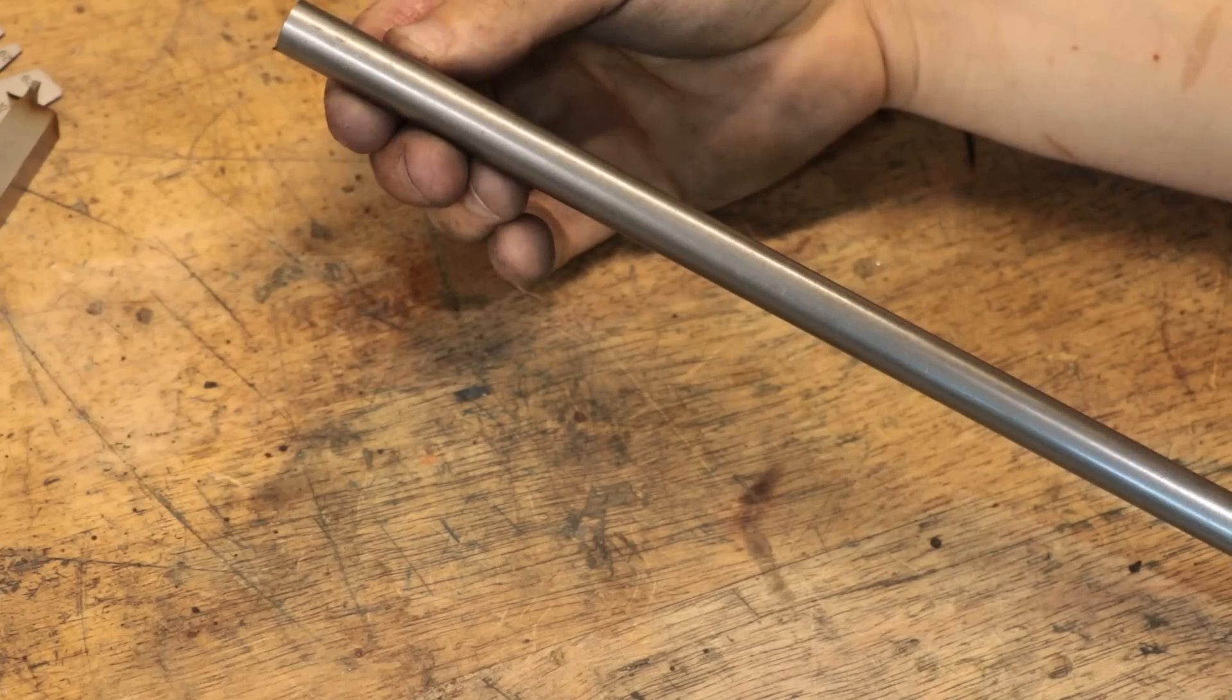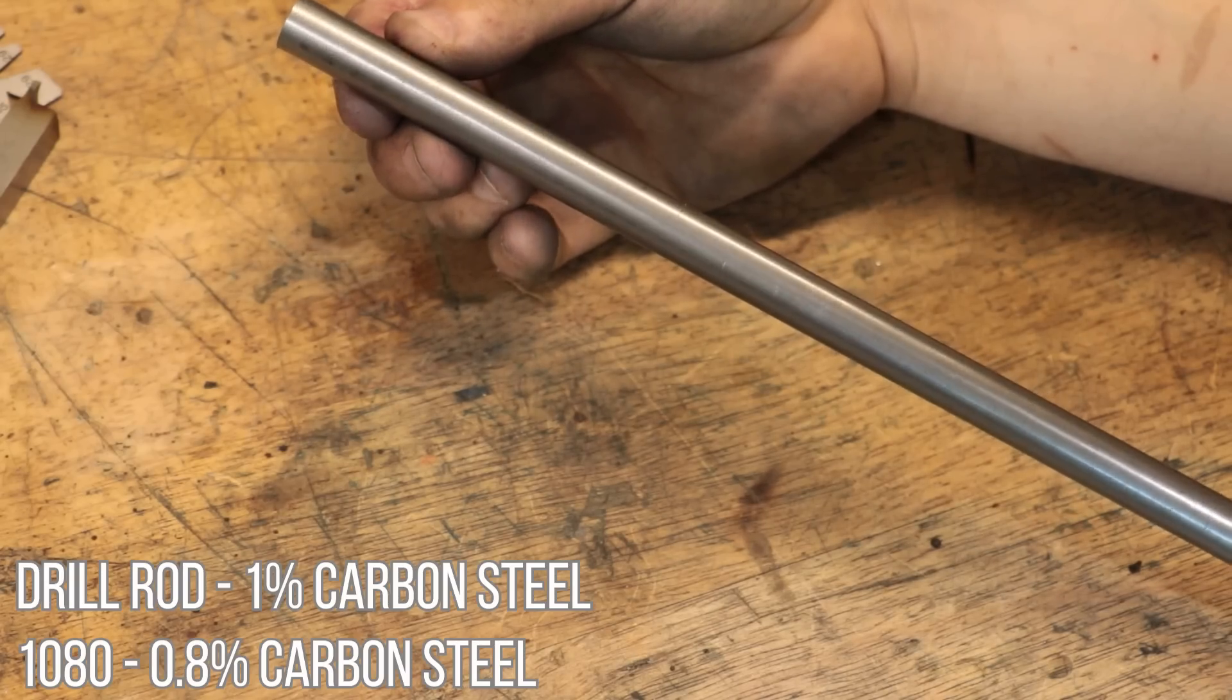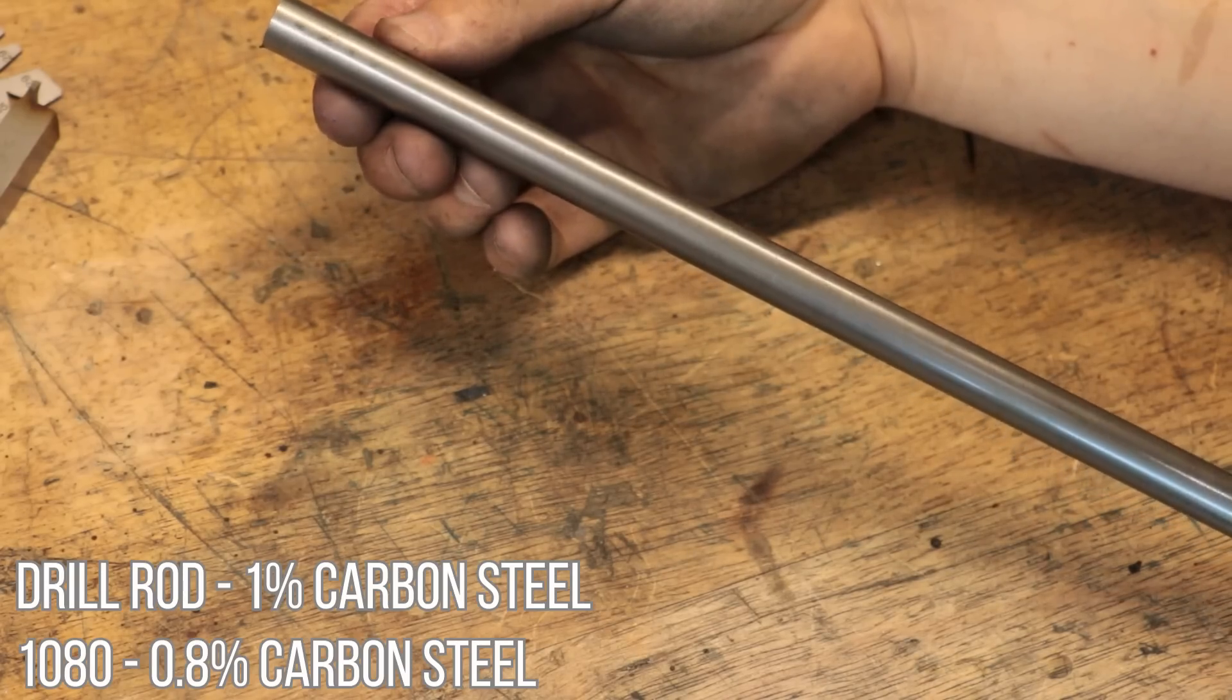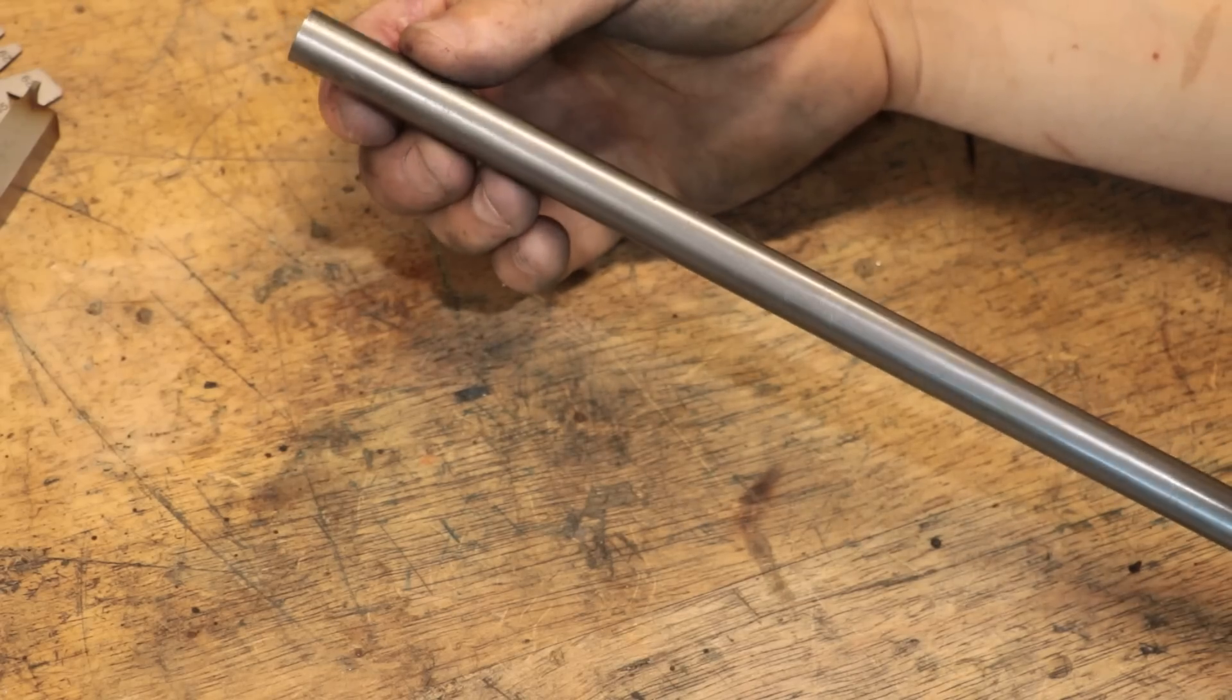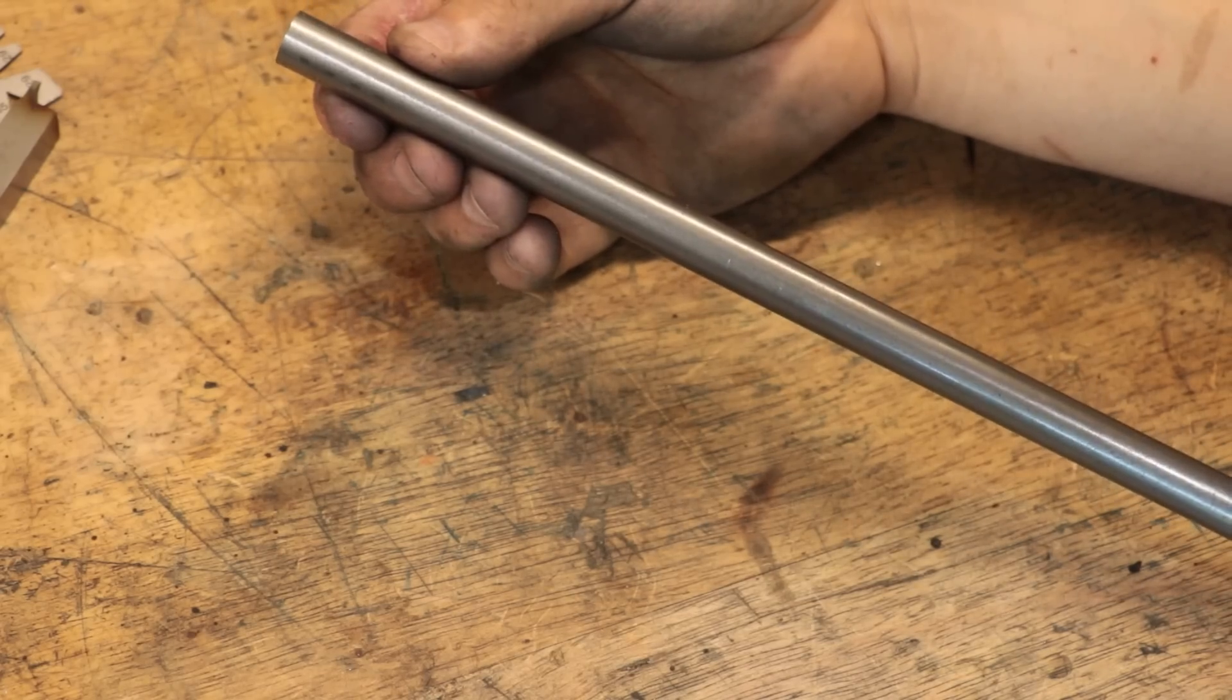And to make the tap, I don't have any drill rod on hand, but I do have some 1080 steel, which should do. It's almost the same stuff as I'd normally use, but there's a bit less carbon. But we can still harden it, and it should be good for a few uses.